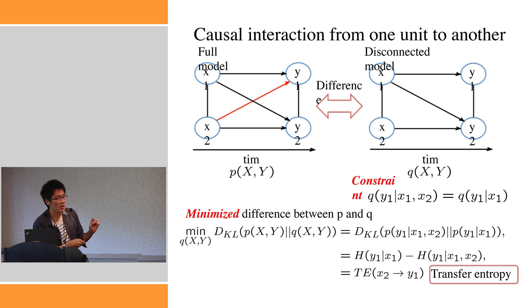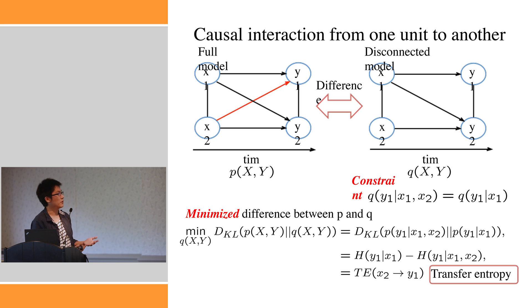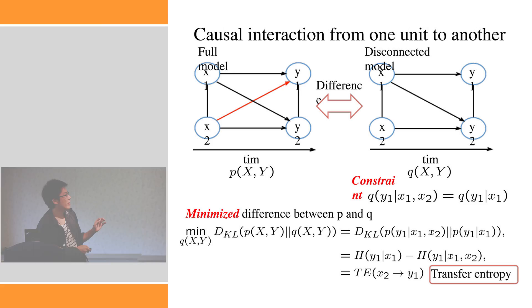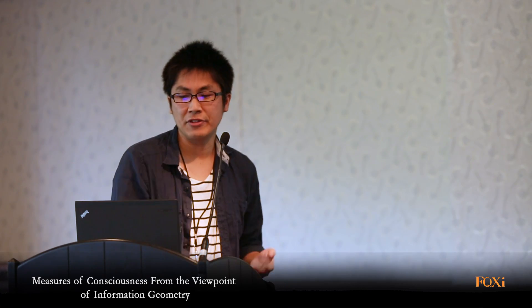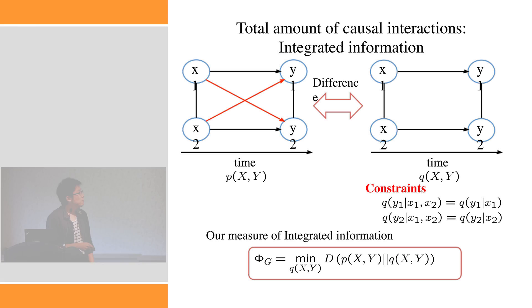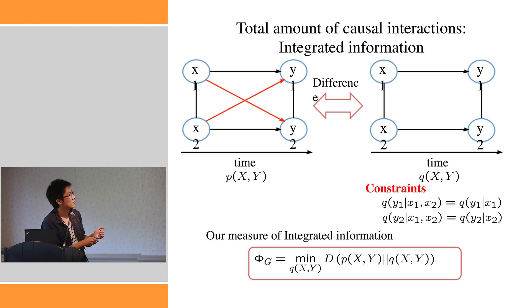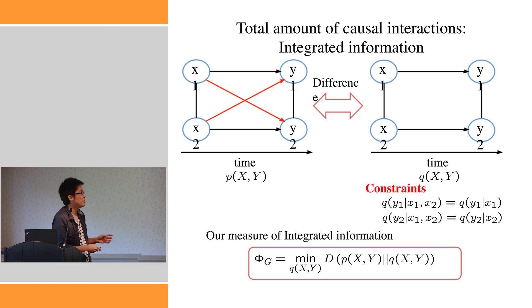If we cut only one causal inference, we can derive transfer entropy. Minimizing the KL divergence under this constraint gives the transfer entropy, which quantifies just the inference of X2 — represented as the entropy of Y1 given only X1 minus the entropy of Y1 given everything. This quantifies the effect of X2 for predicting Y1. For integrated information, we want to quantify the causal interactions between the parts, so we cut both directions and impose two constraints. Minimizing the difference between P and Q then gives us the measure of integrated information.